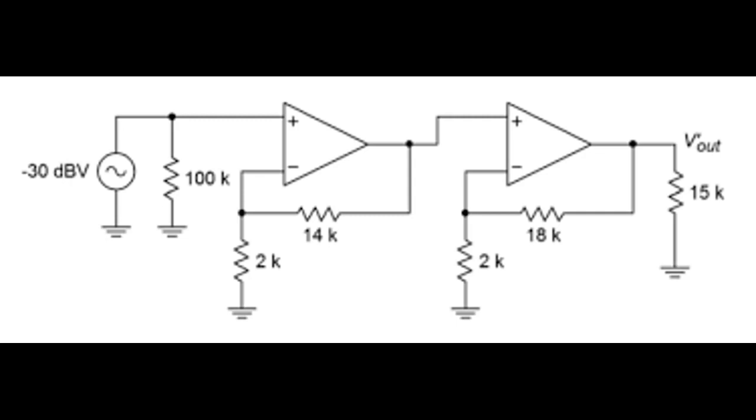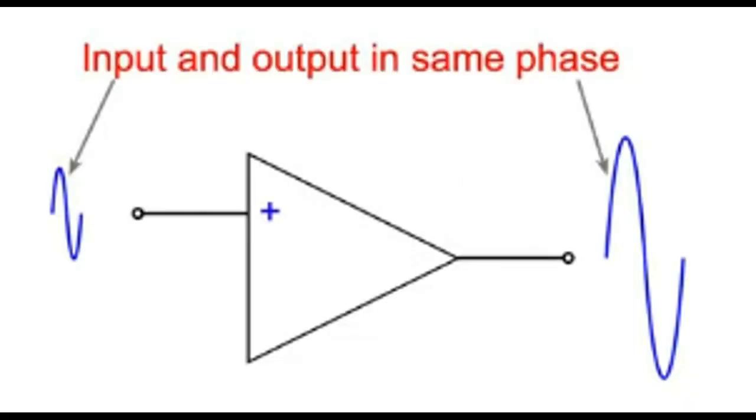One of the two inputs is labeled plus for the non-inverting input and minus for the inverting input. If a signal is applied to the non-inverting input, the signal will come out in the same sense as it appears in the input. In other words, a rising input level on the non-inverting input will result in the output level increasing, and the output will be in the same phase.